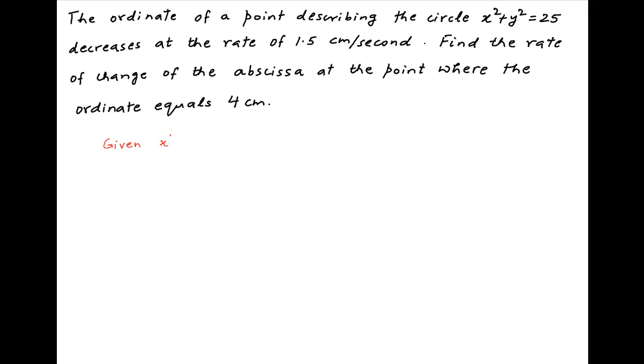We are given that the point is traveling on the circle x squared plus y squared equals 25. When the ordinate y equals 4 centimeters, we can use this equation of the circle to find the value of x.